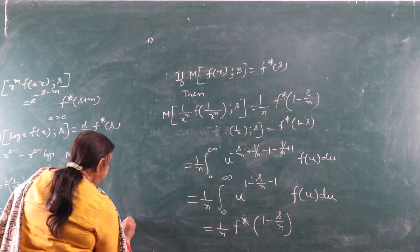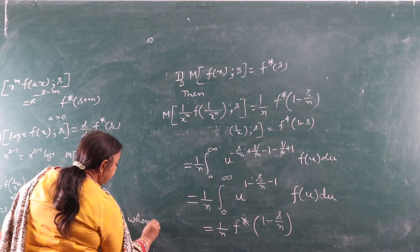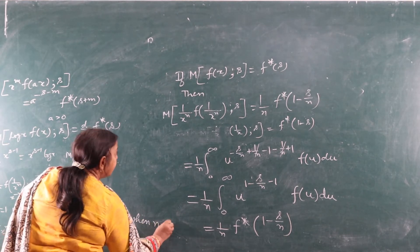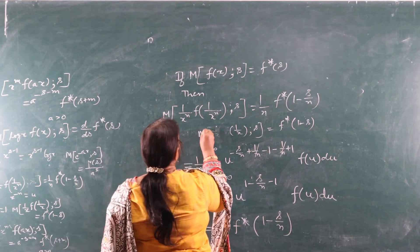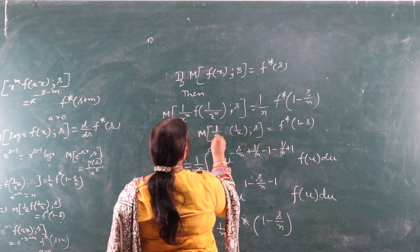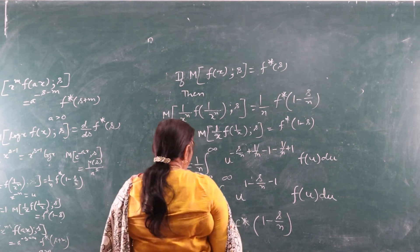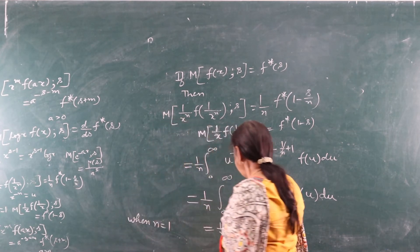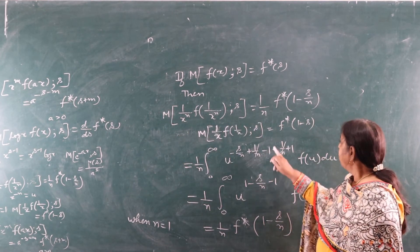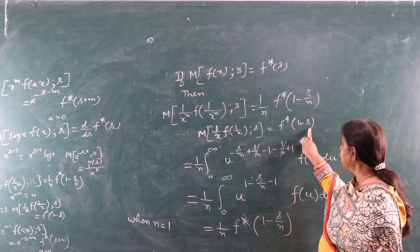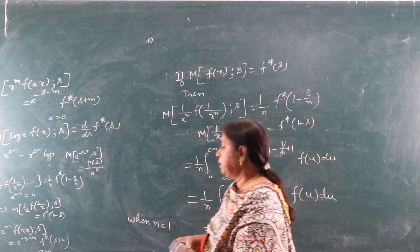When n=1, what do we get? At n=1, this becomes the Mellin transform of (1/x)·f(1/x) with respect to s. Substituting n=1 here, the 1/n becomes 1, giving F*(1−s).